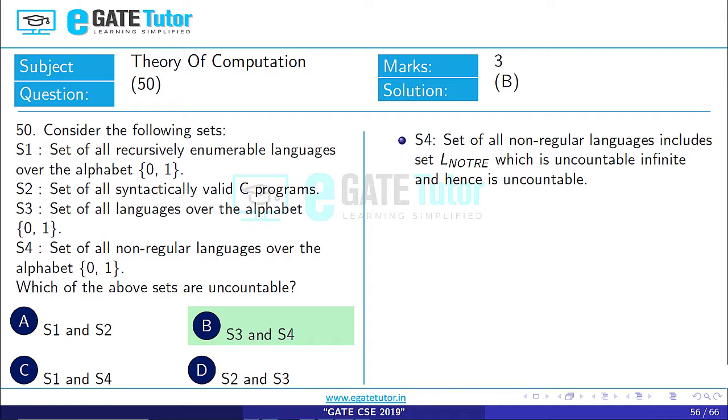So it is uncountably infinite; hence it is uncountable. Therefore, option B is correct: S3 and S4.